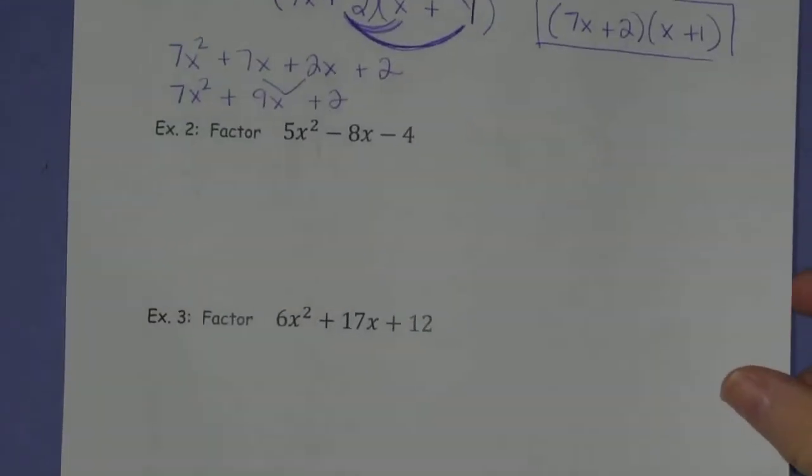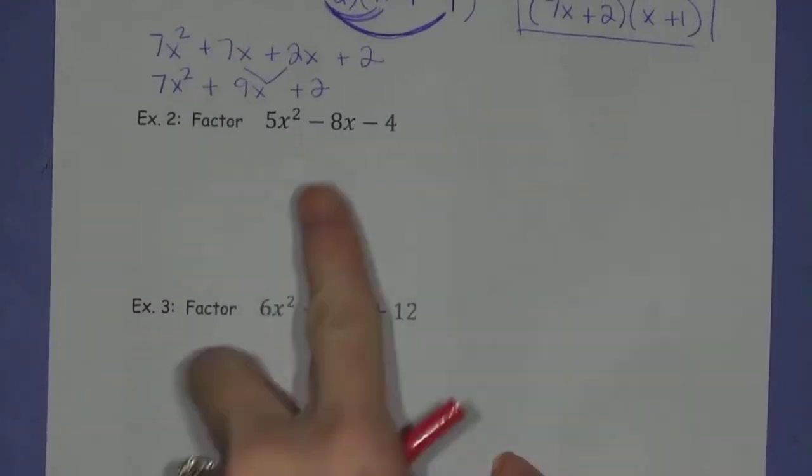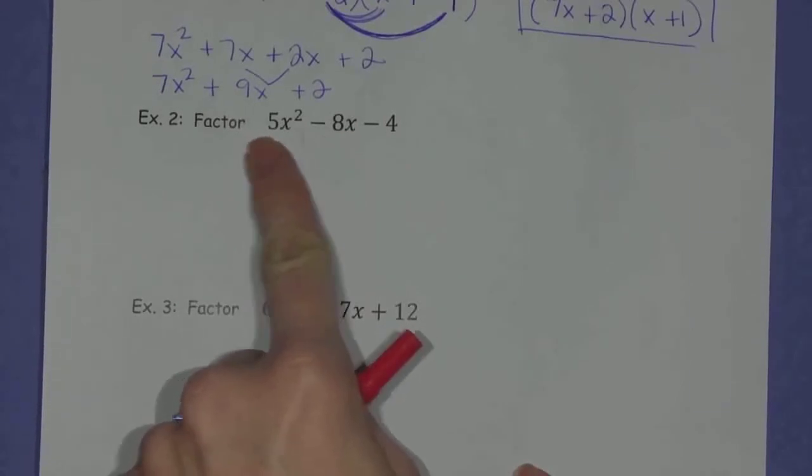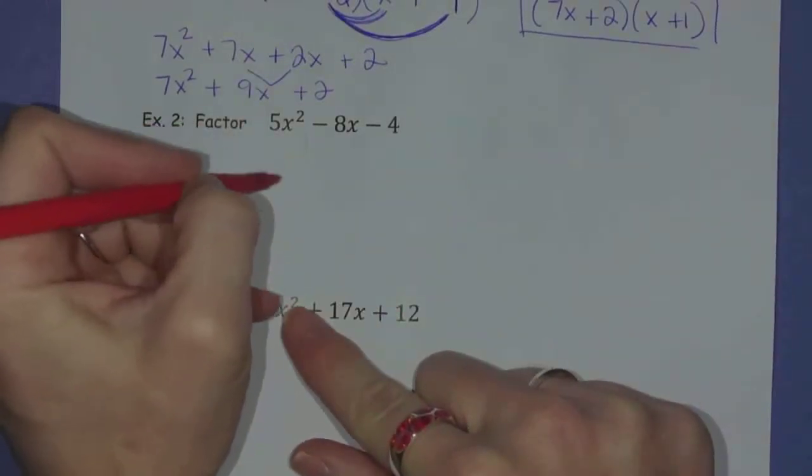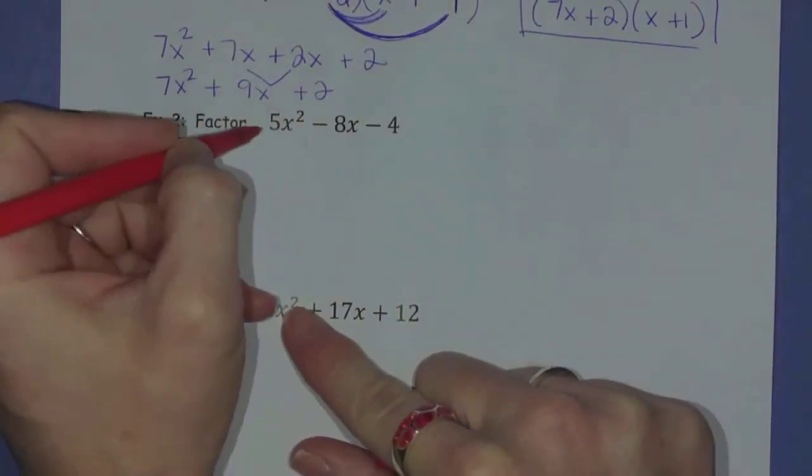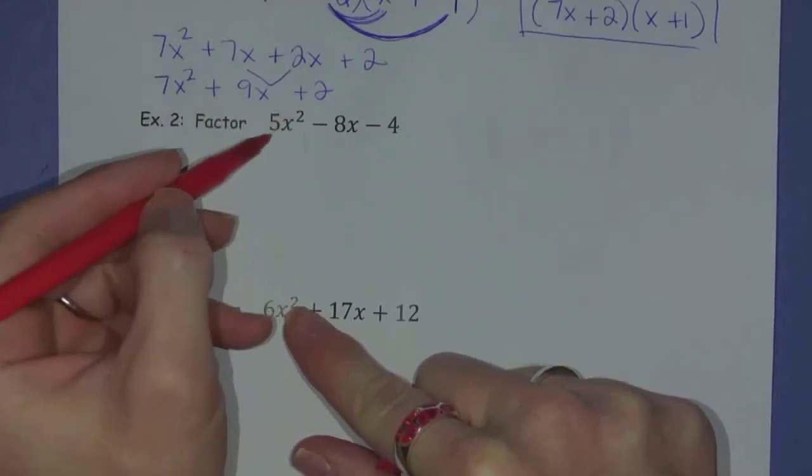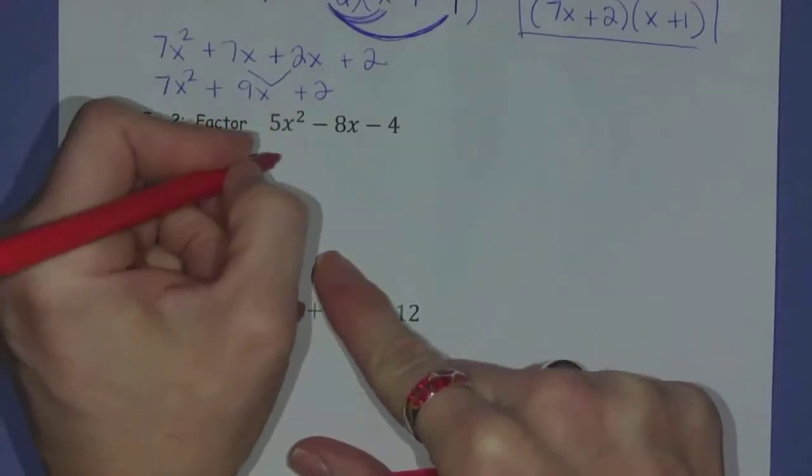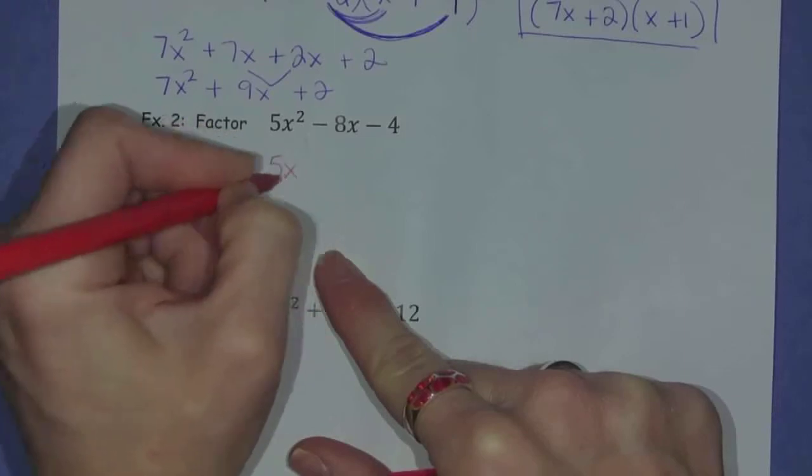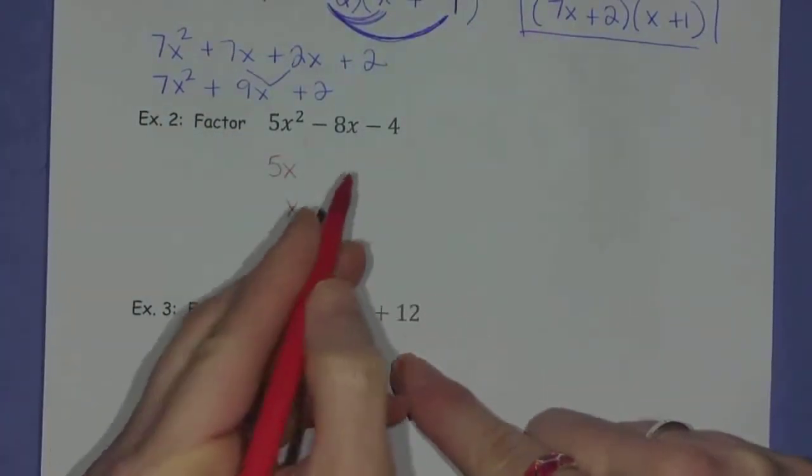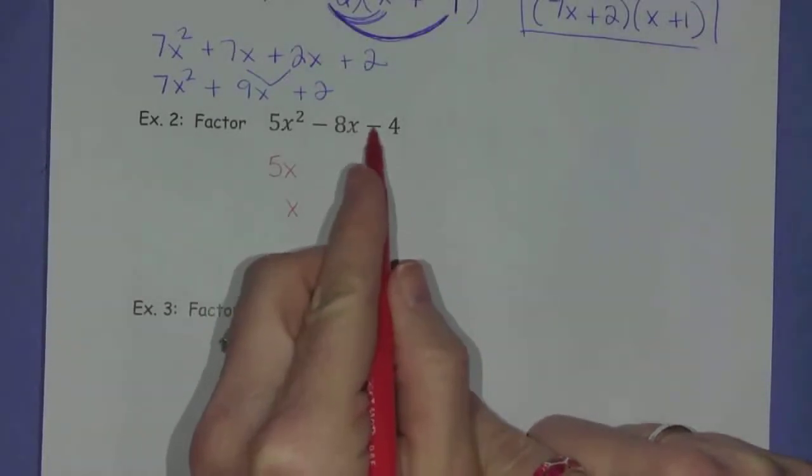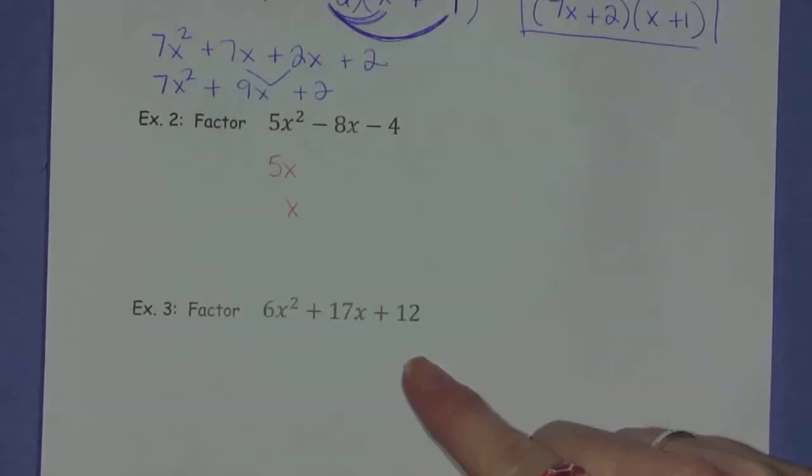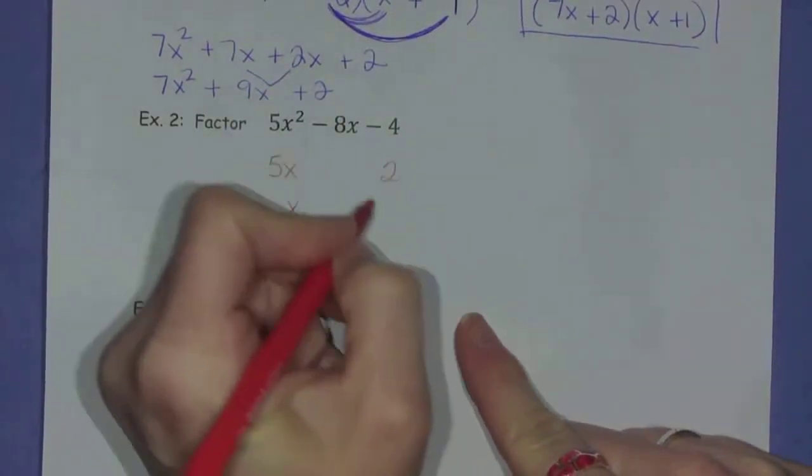Okay, let's go to the second example. 5x squared minus 8x minus 4. I'm going to use that strategy the first time around on this one, but don't feel like you have to. Okay, so I need two terms that multiply to give me 5x squared. Again, 5 is prime, so this is pretty simple. It's going to have to be 5x and 1x. Now, I need two numbers that multiply to give me a negative 4. Well, I'm thinking 2 and 2.